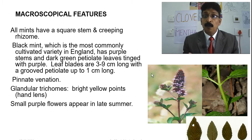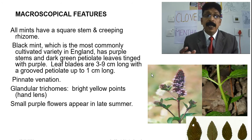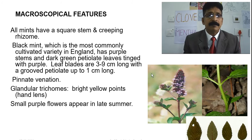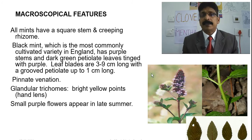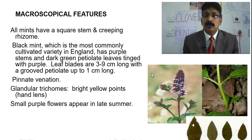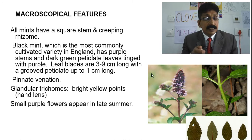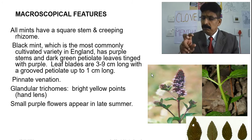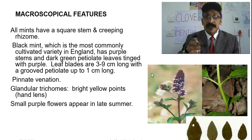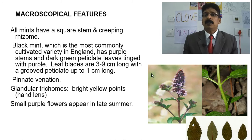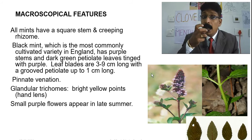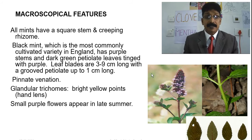The venation is pinnate. Glandular trichomes are present, and bright yellow points can be observed when you use a hand lens — even a dissection microscope at 5x or 3x magnification, though a hand lens gives up to 20–25x magnification and shows the yellow points more clearly. Small purple flowers can be seen in late summer, as visible in the picture.